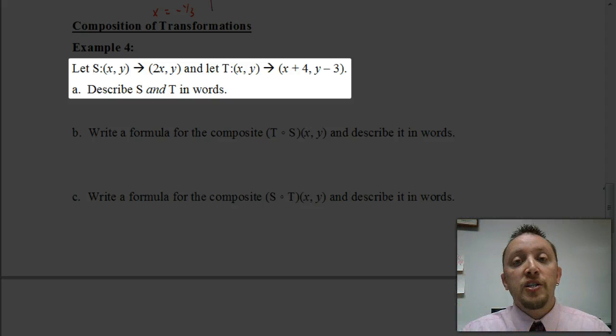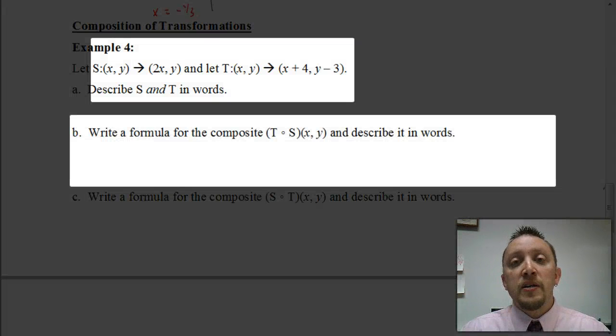And then we have a translation that's saying (x + 4, y - 3). What that means is horizontally, the graph is moving to the right 4 units, and vertically, it's going to move down 3 units. So that's how we would describe it in words. But now, let's look at how to do parts b and c, where we actually have the composition of these two transformations.